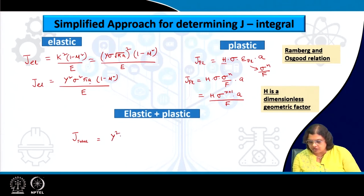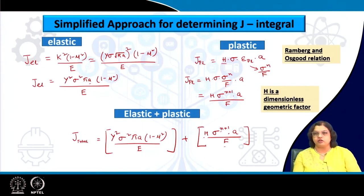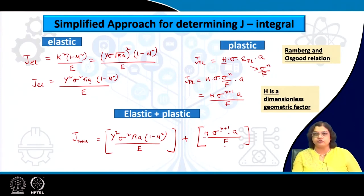Overall, J total can be obtained by summing the elastic and plastic parts. We use three constants — n, h, and F — and if we have these values we can determine J simply without needing the area under the load-displacement curve or performing the full test. For most cases these constants are easier to find than the J values themselves, making this a straightforward and simplified approach.